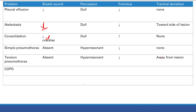COPD — chronic obstructive pulmonary disease, which includes emphysema and chronic bronchitis: breath sounds are decreased because these patients have obstructive lung disease and aren't breathing well. Percussion: because of the obstructive lung disease they can't push air out, so more air stays in the lungs — hyper-resonant. Fremitus: more air in the lungs means decreased fremitus. No tracheal deviation.